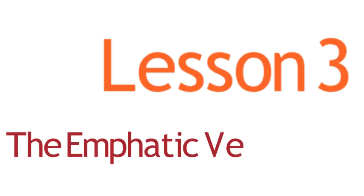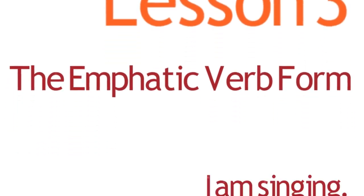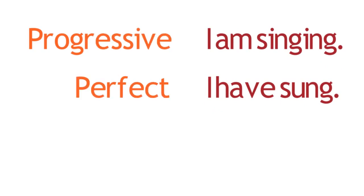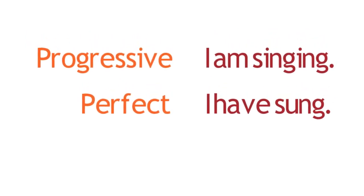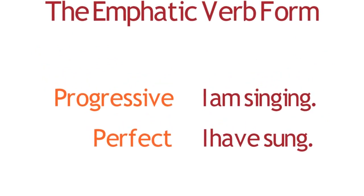Lesson 3: The Emphatic Verb Form. In the previous lesson, you learned to distinguish two forms of compound verbs: the progressive and perfect forms. Another compound verb form is the emphatic verb form.